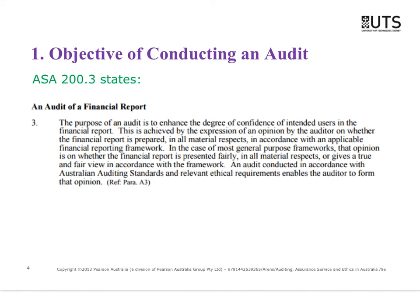If you want to look at the auditing standards and don't have the handbook, you can go to auasb.gov.au and find all of the auditing standards free to download. You can print out the ones you want or keep them on your tablet. So ASA 200 is about why we actually want to go and do the audit.